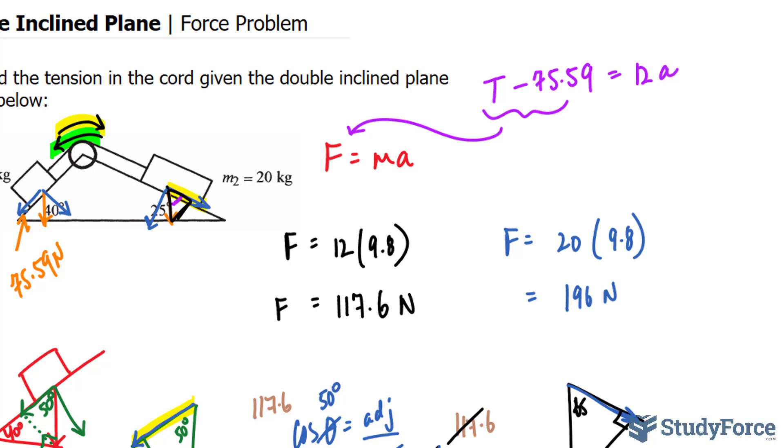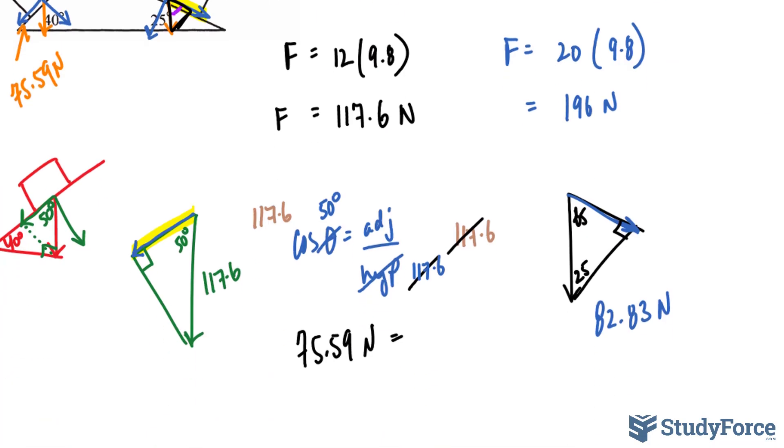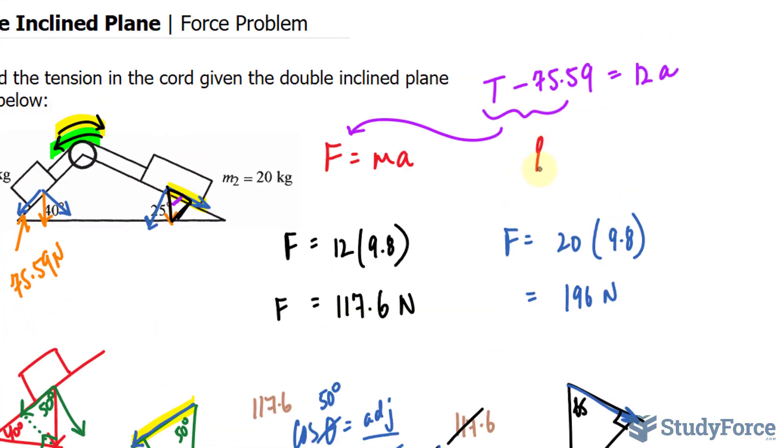And the other formula will be the force going in this direction, which we found to be 82.83. 82.83 minus the tension is equal to its mass of 20 kilograms times the acceleration. The acceleration should be the same because these two masses are linked. Alright.